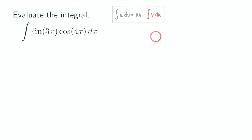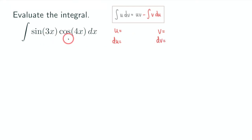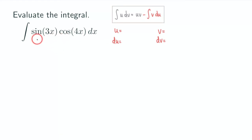We are going to set up a u, v, du, dv table. There was no strict preference on which one you would want to choose u to be, but usually I would try to let u be the function that's not a co-function if you have a product of two trig functions.